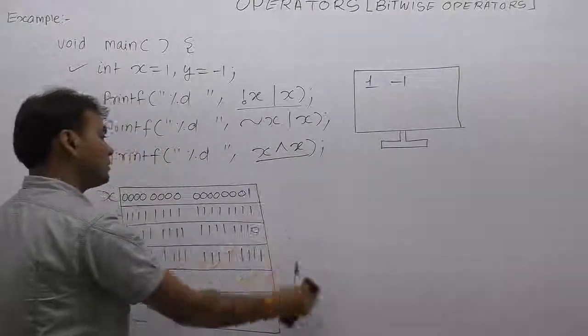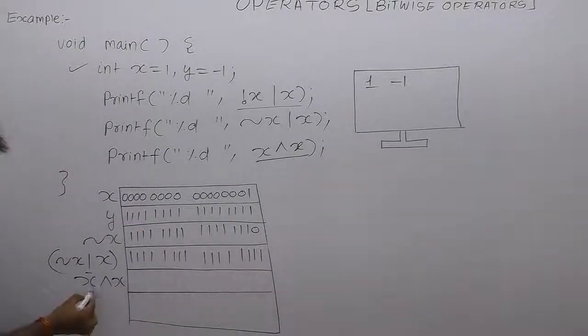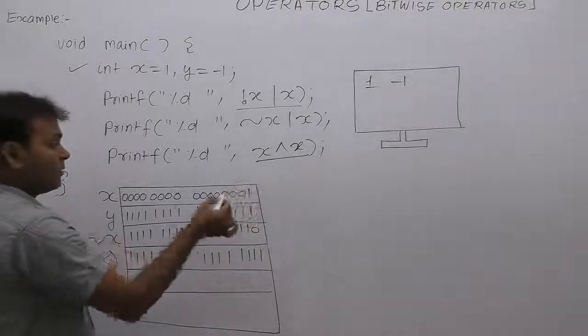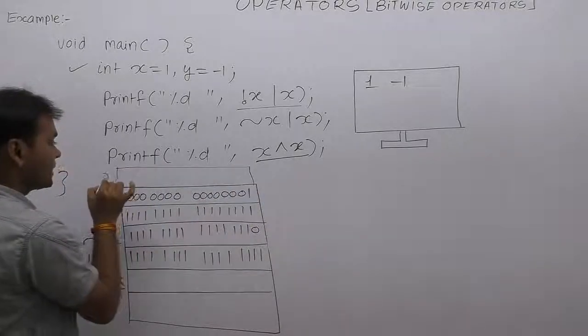When we perform the XOR operation, the binary bits of x with the binary bits of x again - when both bits are the same, XOR always gives 0. So finally, x XOR x gives all 0s.